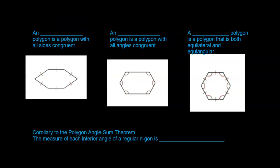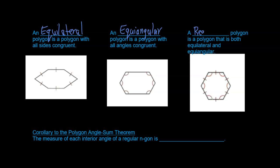There are special types of polygons. An equilateral polygon is a polygon with all sides congruent. An equiangular polygon is a polygon with all angles congruent. And finally we have a regular polygon — this is where the magic happens. A regular polygon is a polygon that is both equilateral and equiangular.